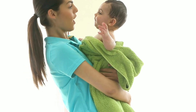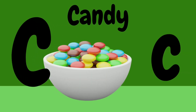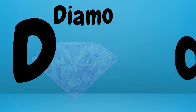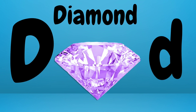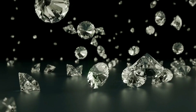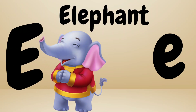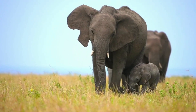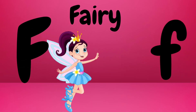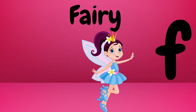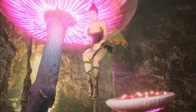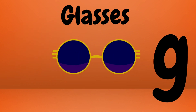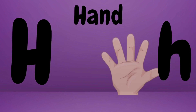B is for Baby. Baby, baby. This is a baby. C is for Candy. Candy, candy. This is candy. D is for Diamond. Diamond, diamond. This is a diamond. E is for Elephant. Elephant, elephant. This is an elephant. F is for Fairy. Fairy, fairy. This is a fairy.